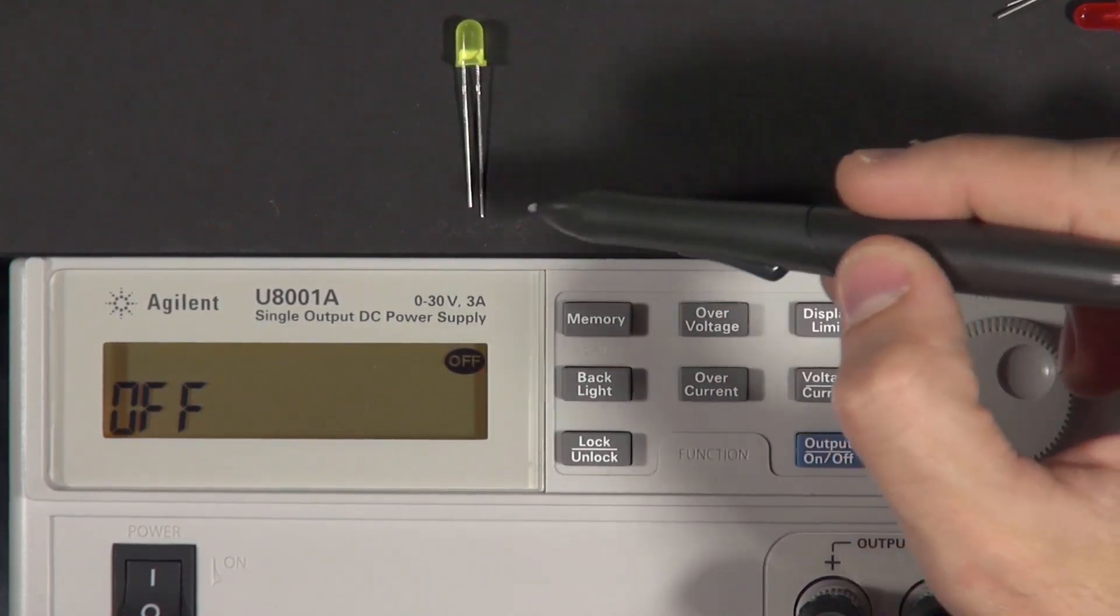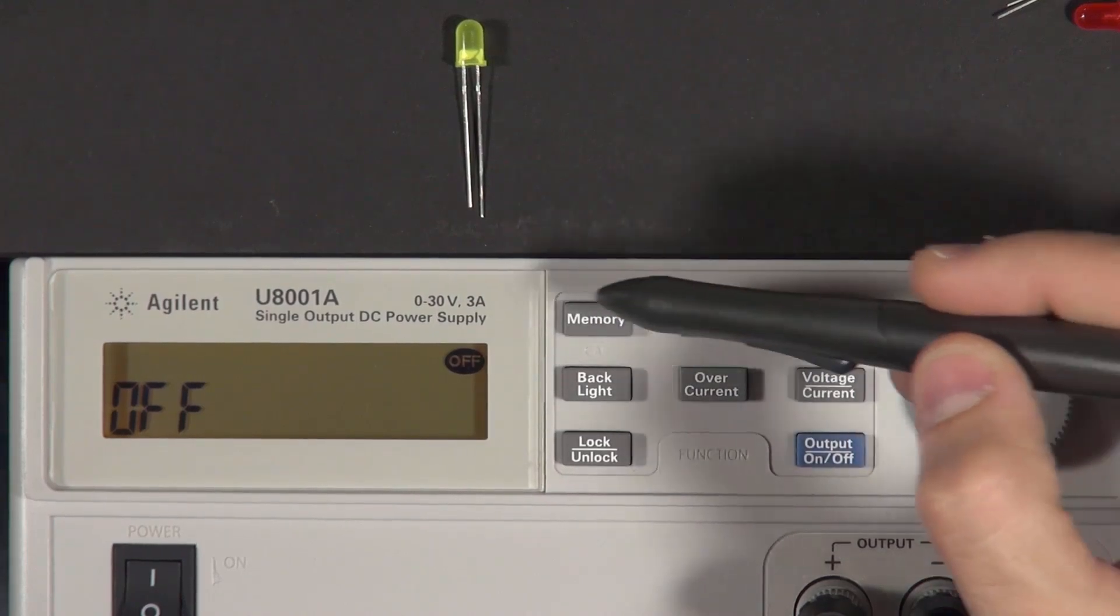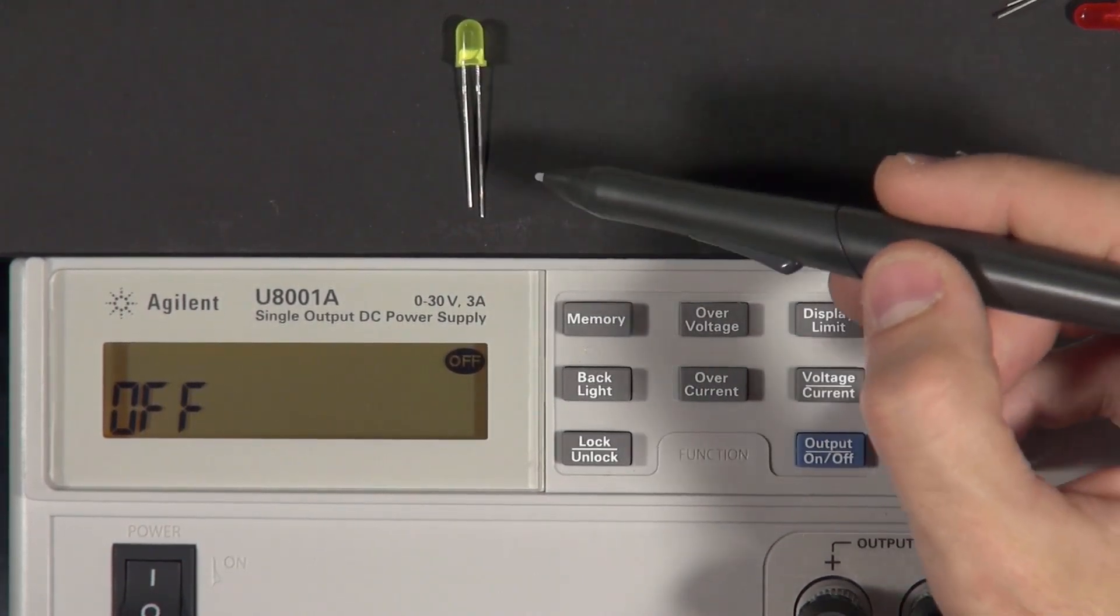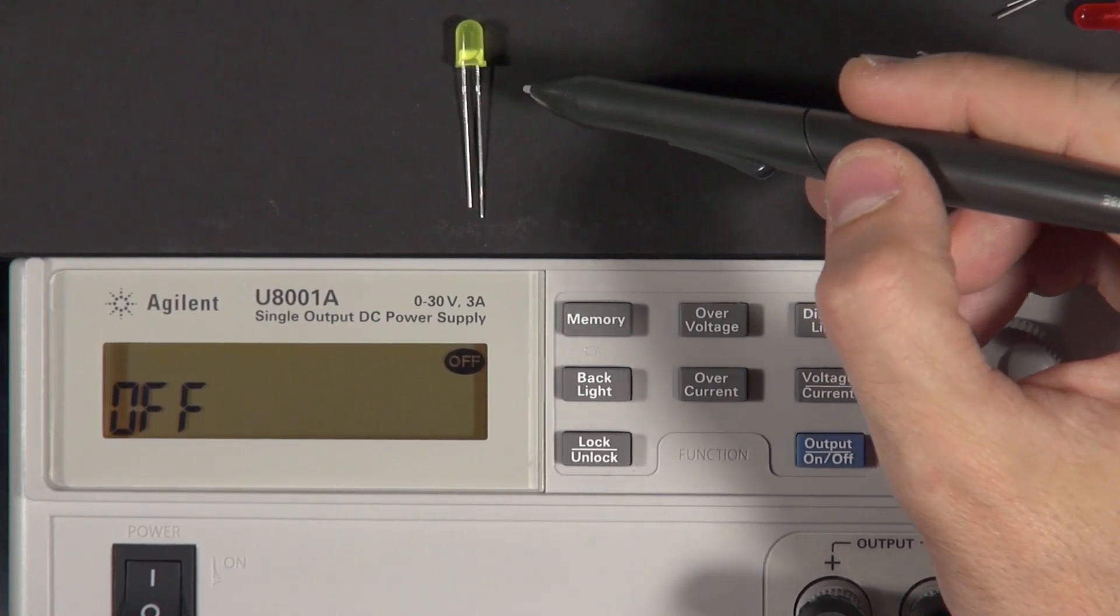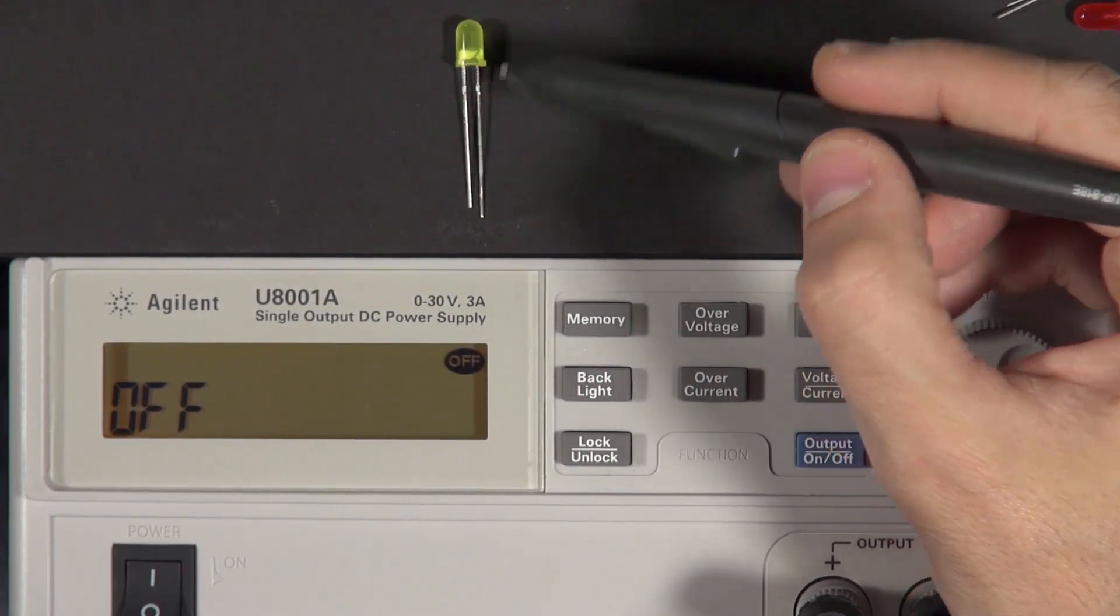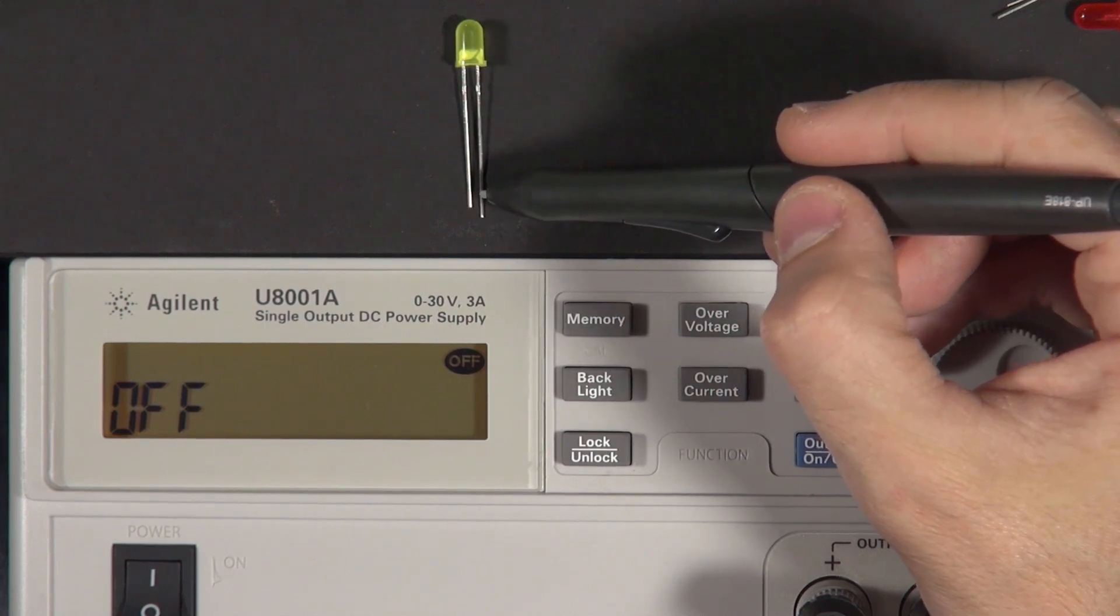But because it only allows current to flow in one direction, we need to make sure that we are trying to pass current through it in the correct direction, otherwise it won't work. And so the way that we can tell which direction to hook this up is that the leads are different lengths. And so you can see there's a shorter lead and a longer lead.